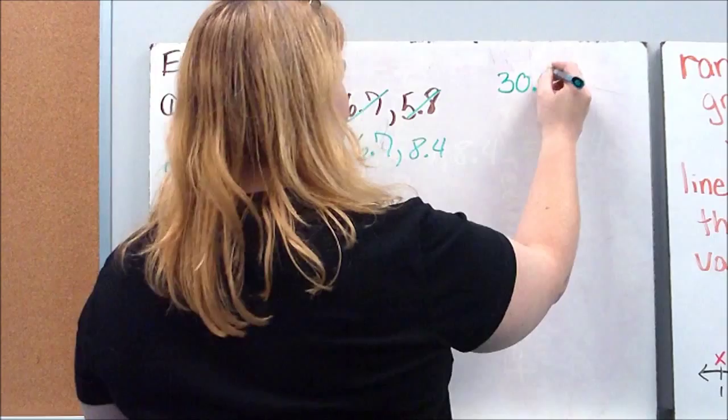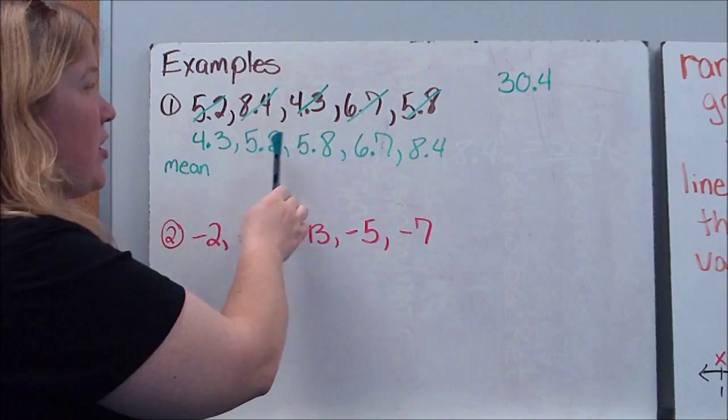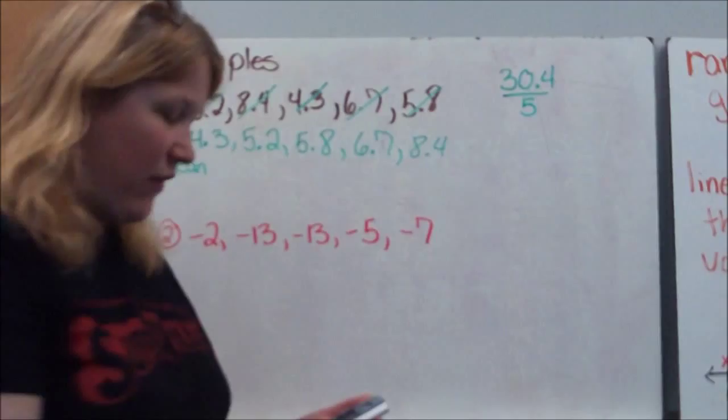Now we need to divide by how many numbers we have. I added up one, two, three, four, five different numbers. So I need to divide that by five. When I do that, I get 6.08.